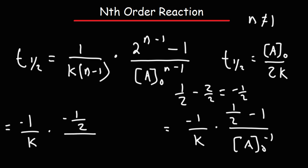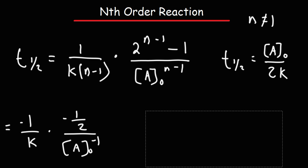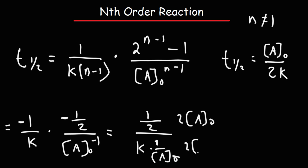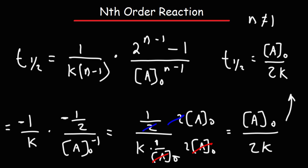So we have negative 1/2 on top, over a_initial to the negative 1. These two negative signs will cancel, and we can write this as one fraction: 1 over (2k) times 1 over a_initial to the negative 1, which is basically 1 over a_initial. Multiplying the top and bottom of the fraction by 2·a_initial, a_initial cancels and 2 cancels, giving us the formula a_initial over 2k — which is exactly what we had. That's how you get the half-life for a zero-order reaction using this formula.